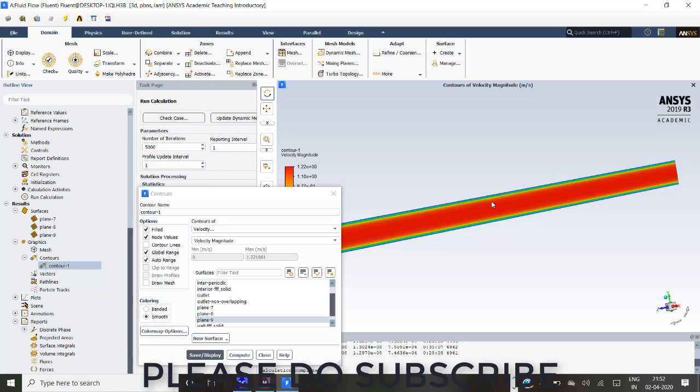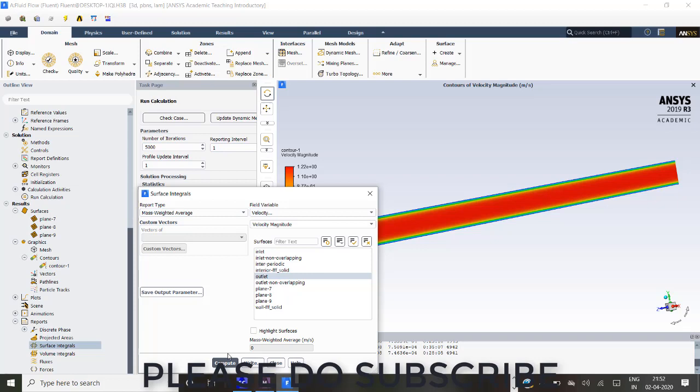At the wall it is zero and it is going increasing till center. Again, if it is going to the wall, velocity is becoming zero.